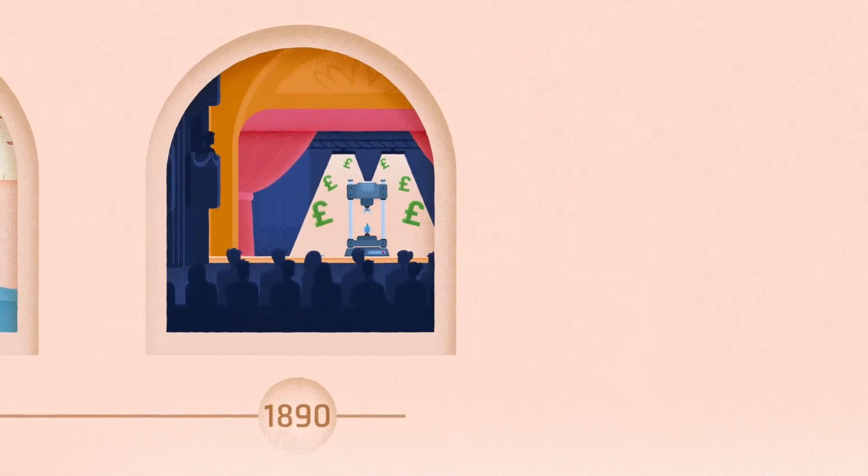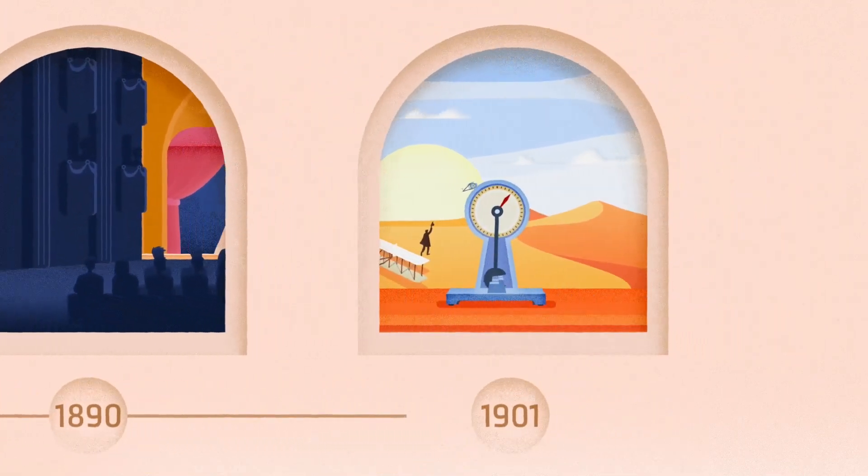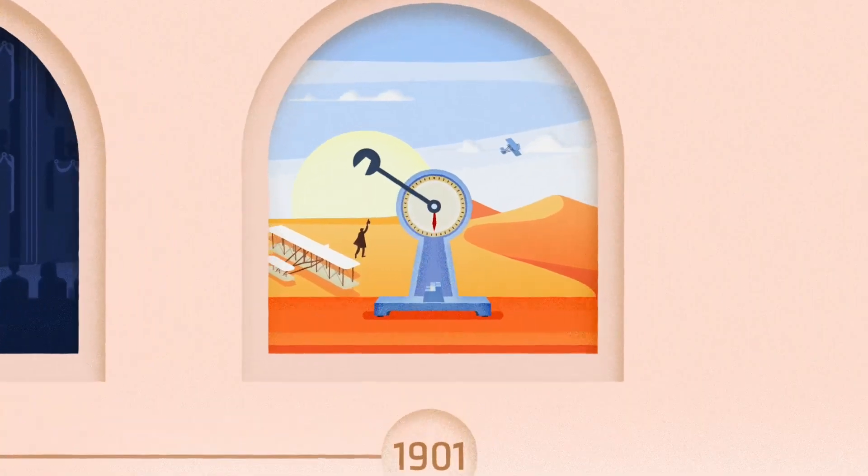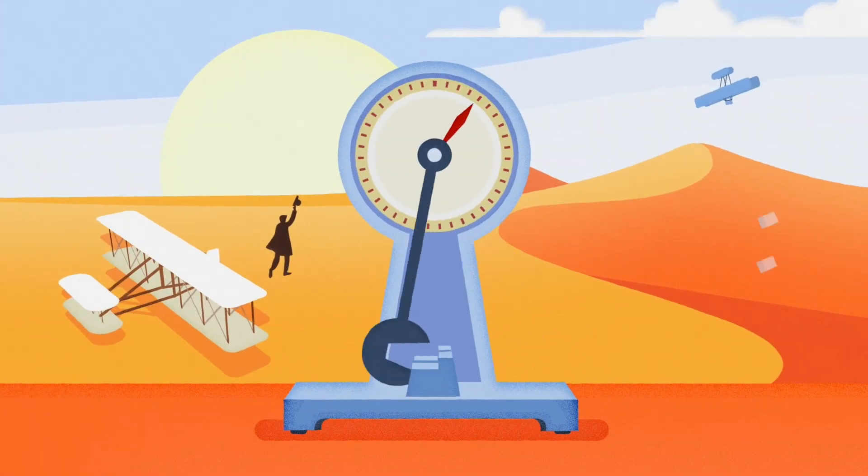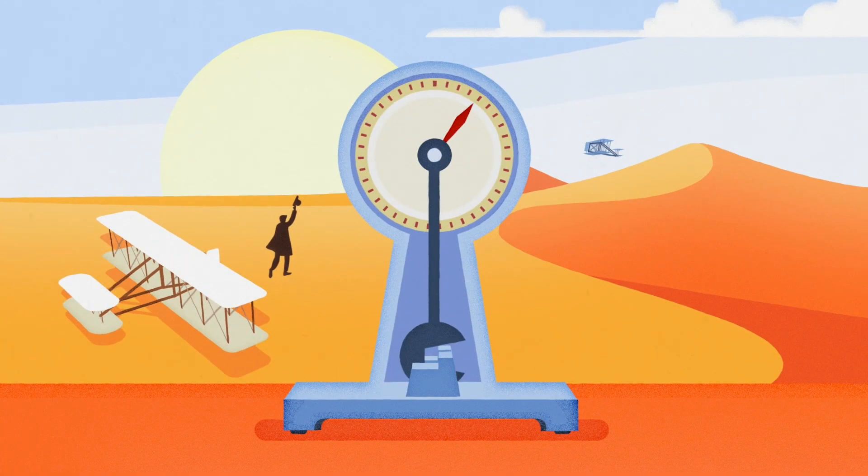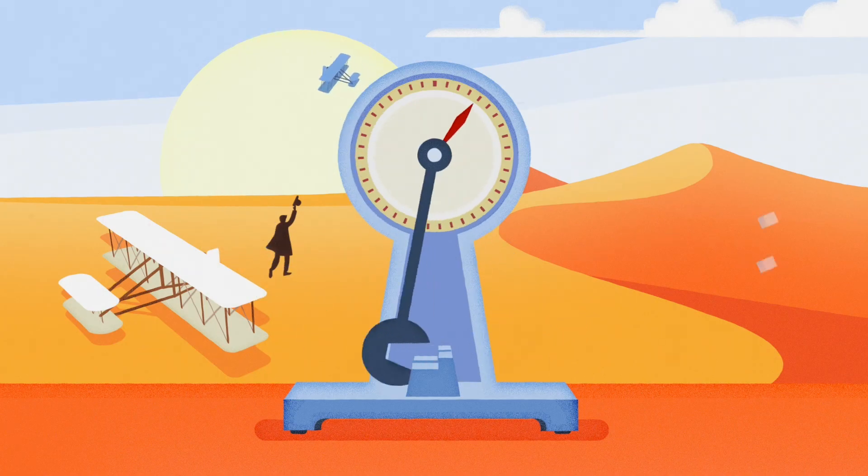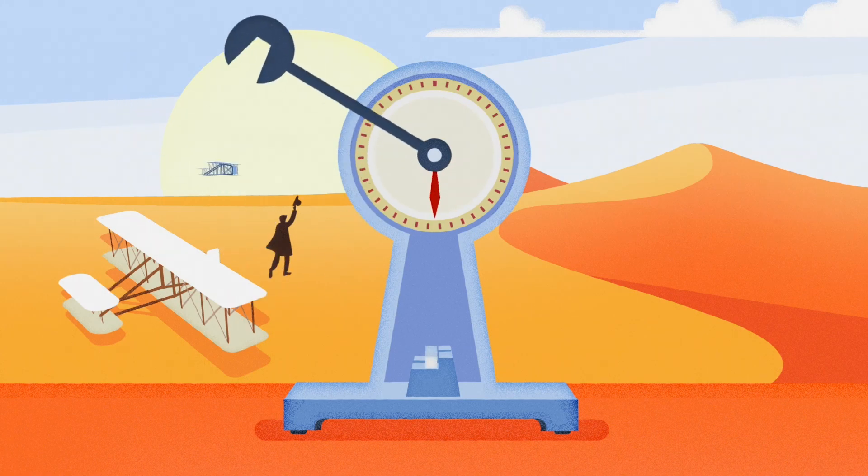Also emerging at about the same time, in 1901, was the Charpy impact test for measuring the fracture energy of materials. The test technique is popular because of its simplicity and the ease with which specimens can be prepared, and it continues to be used extensively.